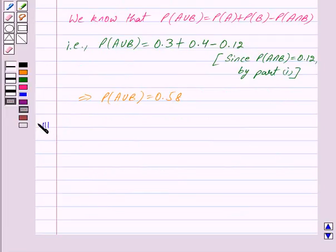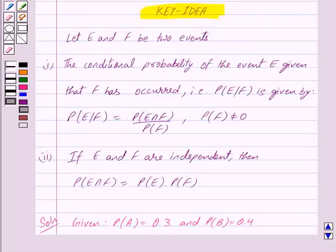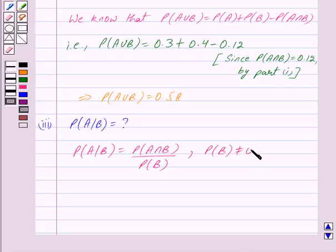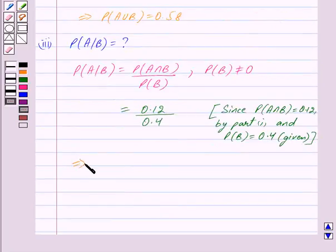In the third part we have to find probability of A given B. By the key idea, probability of E given F equals probability of E intersection F upon probability of F. So probability of A given B equals probability of A intersection B upon probability of B, where probability of B is not equal to 0. This equals 0.12 upon 0.4, which gives probability of A given B equal to 0.3.